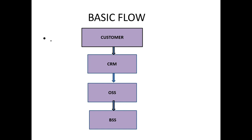In this video we are going to learn about the basic flow. This particular flow has a total of four parts: Customer, CRM, OSS, and BSS. The customer is who is using all these services. CRM is where the customer is actually created — who is going to use the different services. OSS is the part mainly associated with customer activation, and BSS is where the customer billing is done.